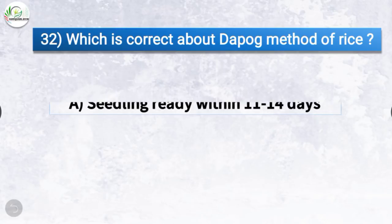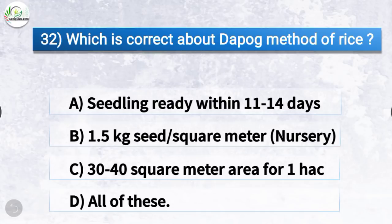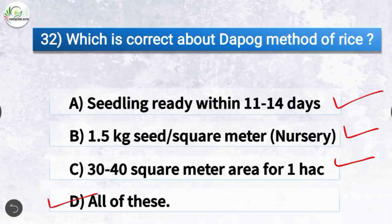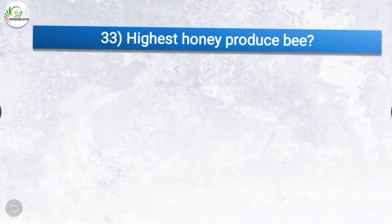Question number 32: Which is correct about the PORK method of rice? The correct answer is option D, all of these — which includes seedling ready within 11 to 14 days, 1.5 kg seed per square meter in nursery, and 30 to 40 square meter area for 1 hectare. All three are correct about the PORK method of rice.